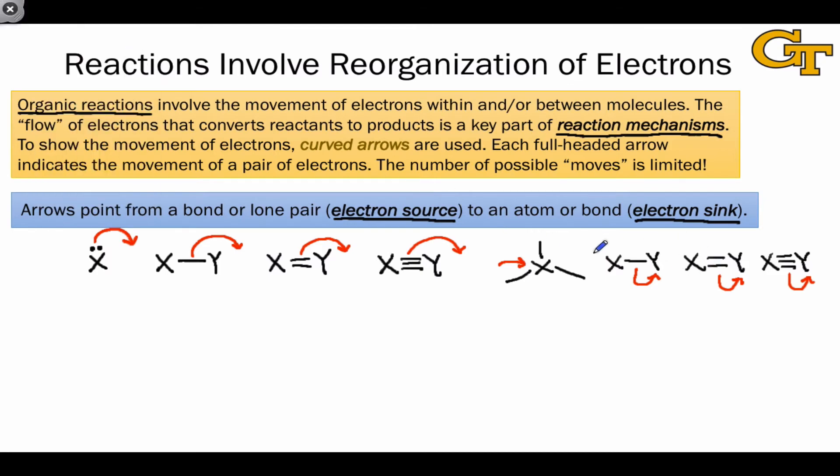So, I'll switch colors to blue to show that. We could, for example, land a pair of electrons between X and Y to show the formation of a double bond, or between X and Y here to show the formation of a triple bond.